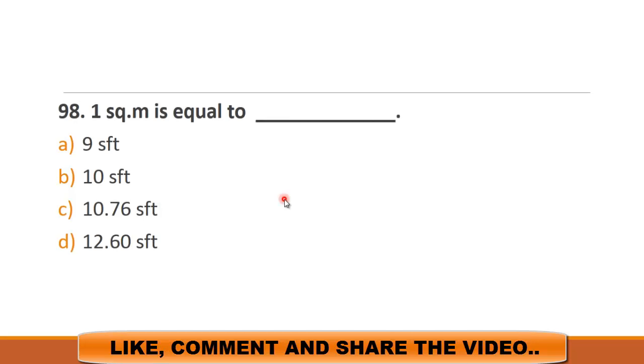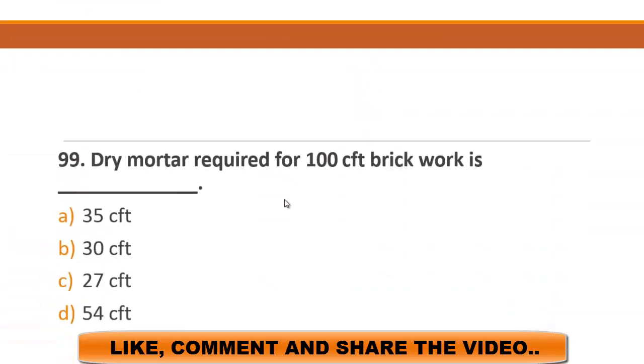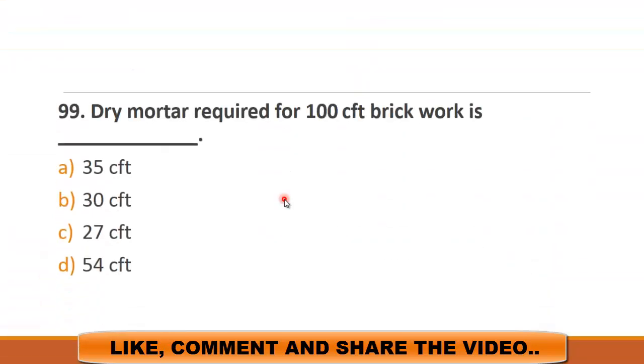MCQ number 98 is: one square meter is equal to. a) 9 square feet, b) 10 square feet, c) 10.76 square feet, and d) 12.60 square feet. So the answer is c) 10.76 square feet.